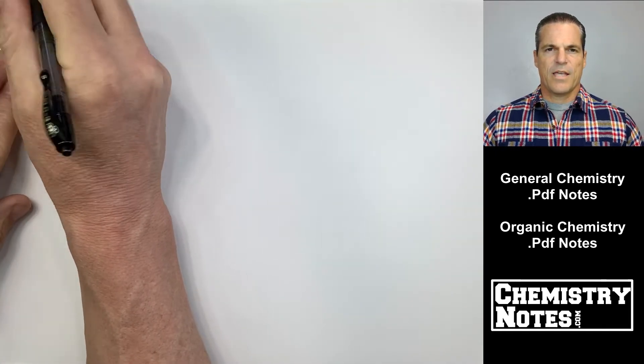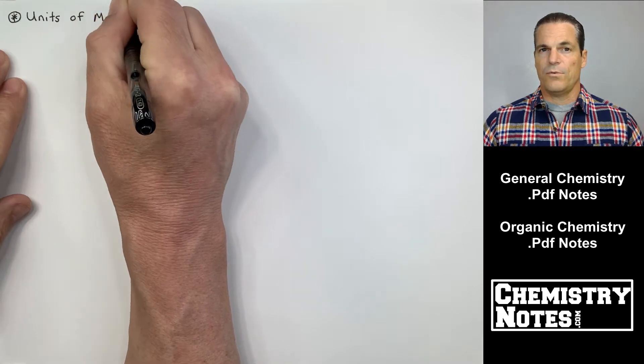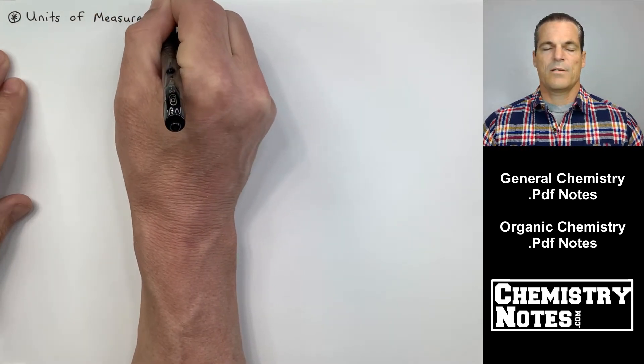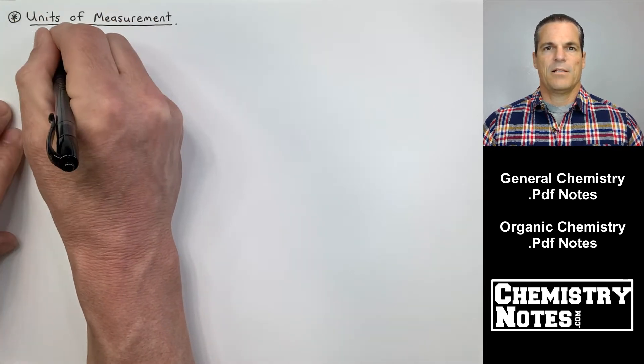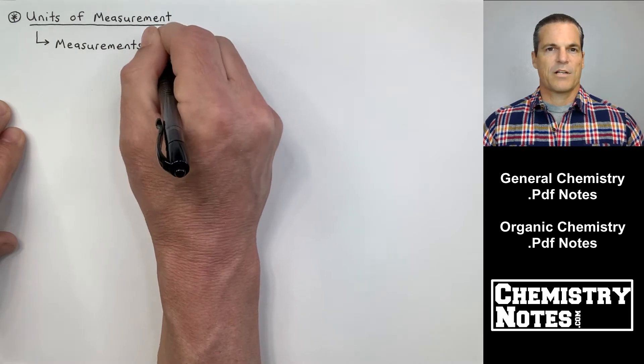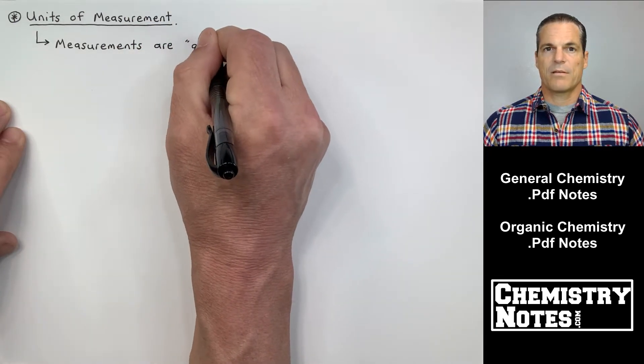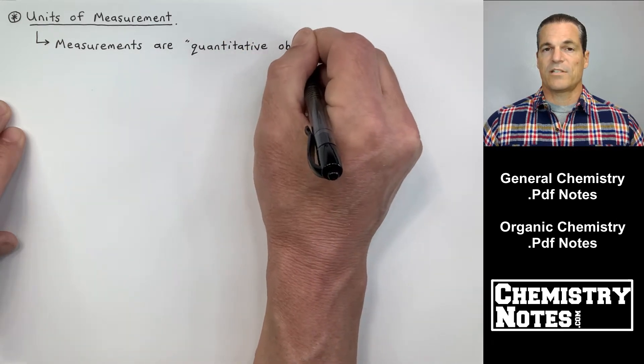Hi guys, Justin again from chemistrynotes.com and this is video number two from section one. Section one is foundations of chemistry. In the last video we talked primarily about scientific method. We also talked about the macroscopic versus the microscopic view.